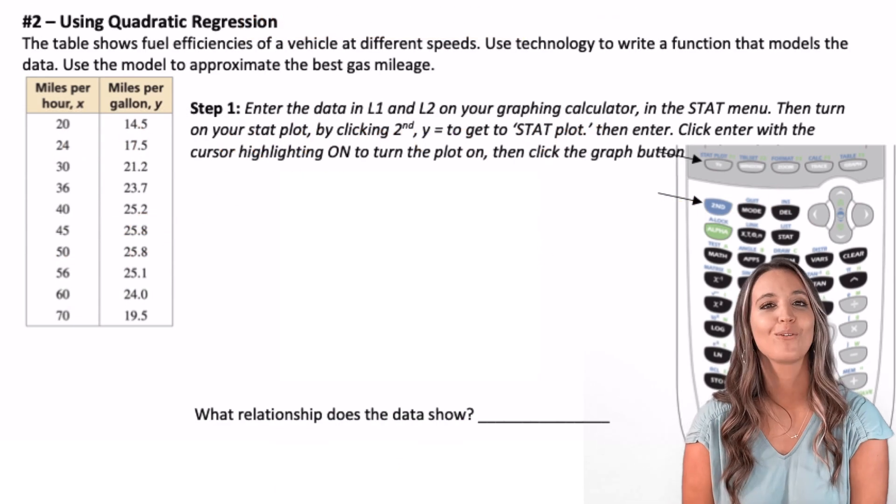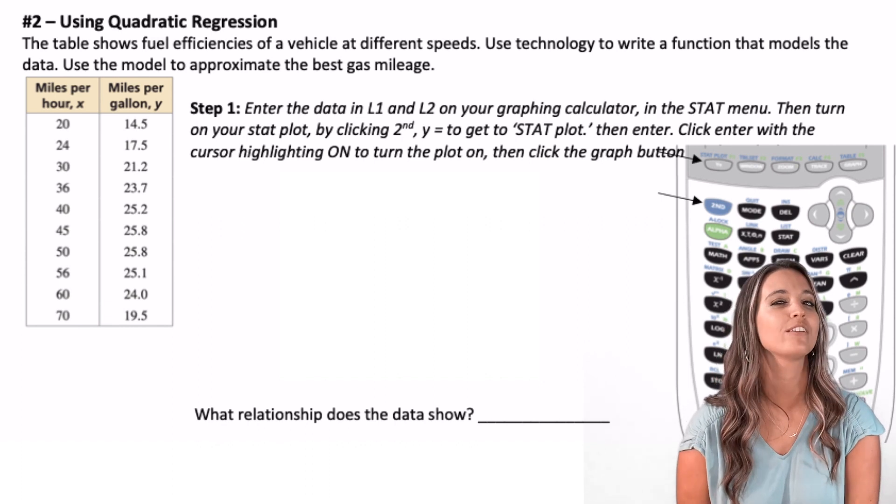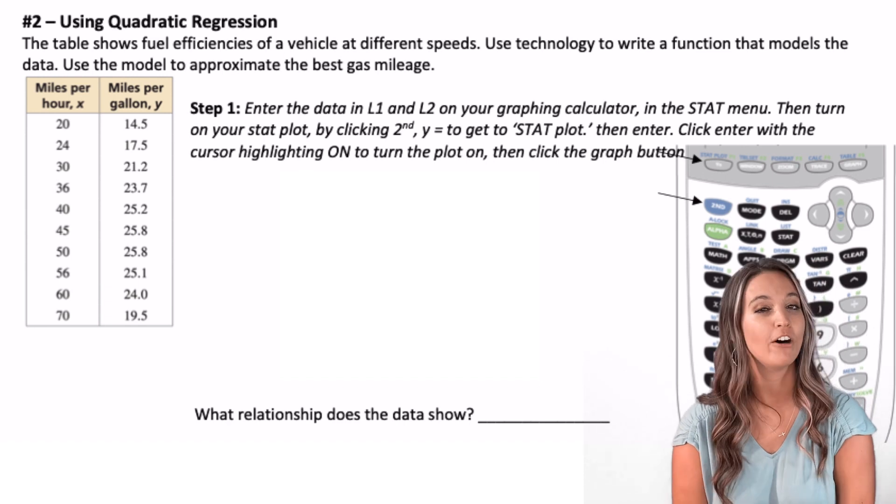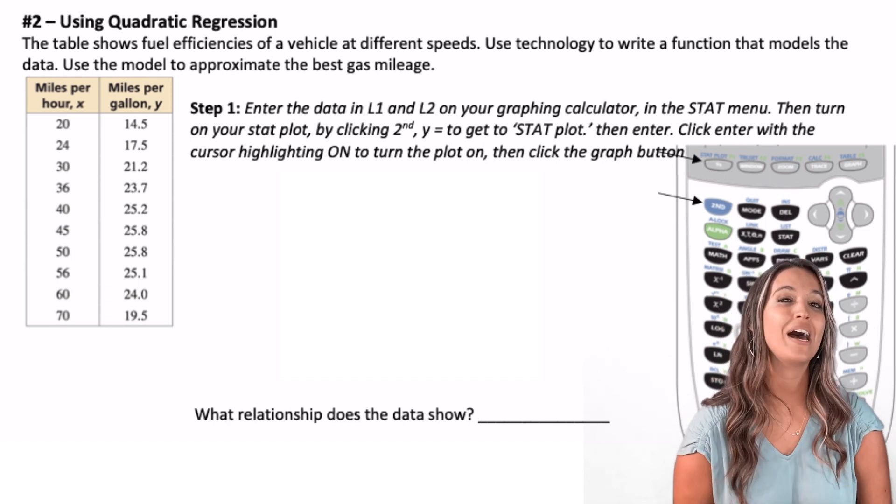Using quadratic regression, the table below shows fuel efficiencies of a vehicle at different speeds. We're going to use technology to write a function that models this data. We're going to use that model to approximate the best gas mileage.